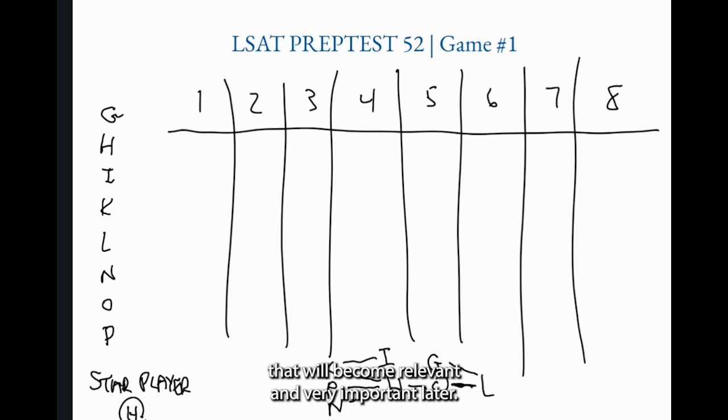Now notice what we have at this point. Eight players on the left of the screen, eight players in our web related to each other. No one's left out and we don't have any of what are often called floaters or free agents. That is players that don't have any rules about them. You will see that with other games, but we don't have it here. Everybody has some limitation and that's great news.